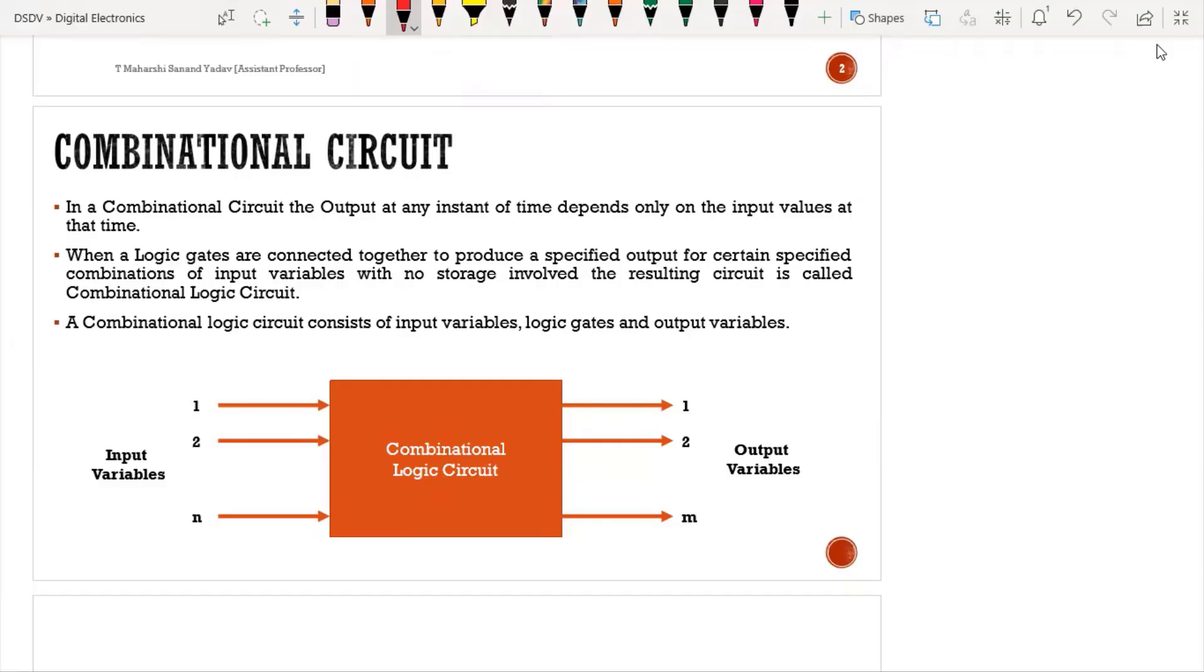Now let us try to understand what is meant by a combinational circuit. In a combinational circuit, the output at any instance of time depends only upon the input values. This is a combinational circuit where output depends on inputs. If I give input, I'll get some output.